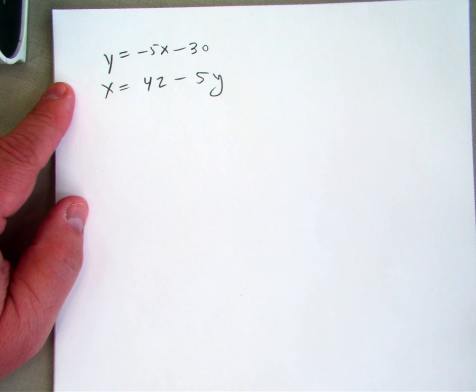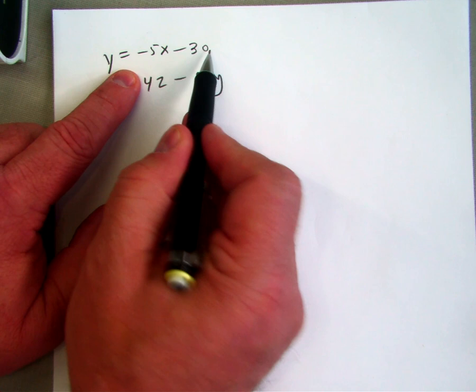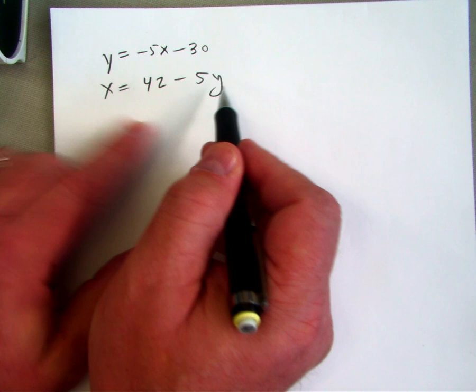It says y equals negative 5x minus 30. That means this y equals negative 5x minus 30. So I can take this and put it right there.